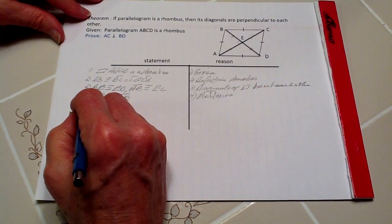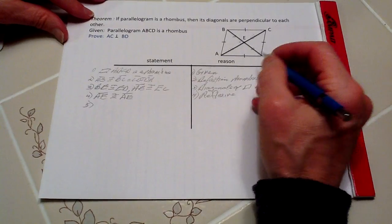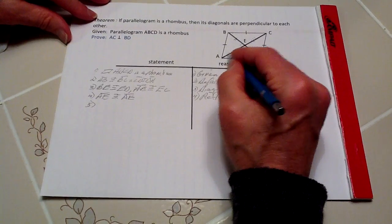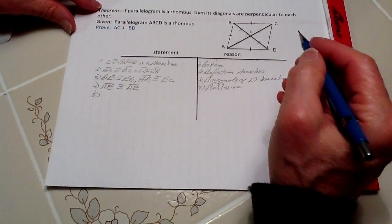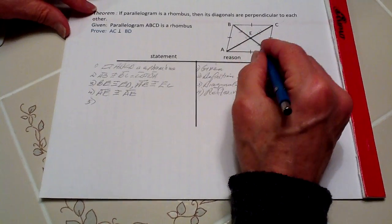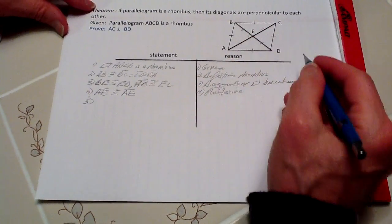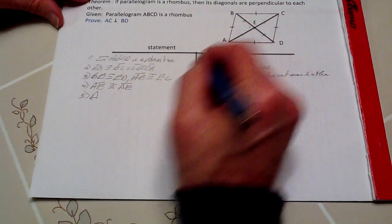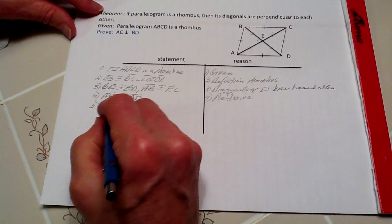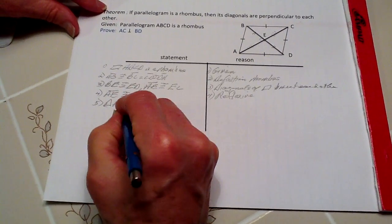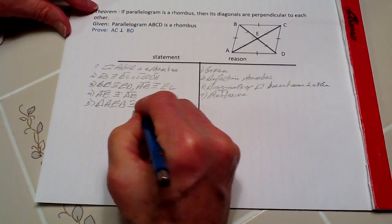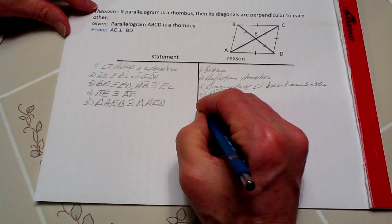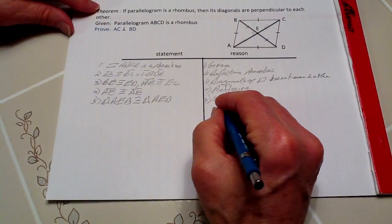Number five, now we know that triangle AEB is congruent to triangle AED because we get equal sides—these two sides are equal, and that obviously is common. So that's all done by side-side-side. Triangle AEB is congruent to triangle AED by SSS, side-side-side.